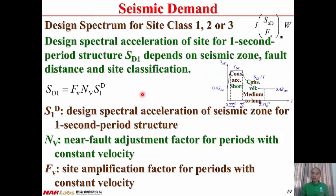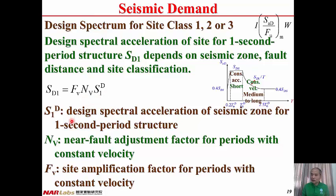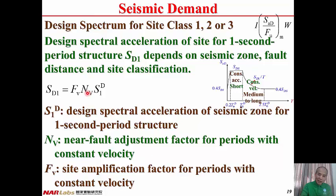Similarly, SD1 is the design spectral acceleration of the site for one-second period structures, depending on seismic zone, fault distance, and site classification: SD1 = FV × NV × S1D. S1D is the design spectral acceleration for the seismic zone for one-second period structures, depending on site location. NV is the near-fault adjustment factor for the period with constant velocity, depending on the fault distance. FV is the site amplification factor for the period with constant velocity, depending on whether the site is hard, ordinary, or soft.